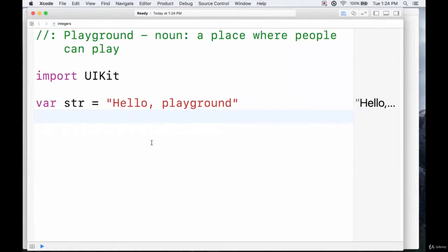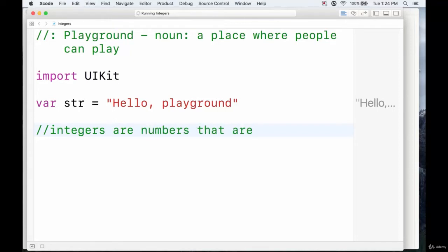Alright, so now we've taken a look at booleans, let's take a look at integers. So what exactly is an integer? Well, if you recall from high school math, integers are numbers that are negative, positive, zero, and must be whole.